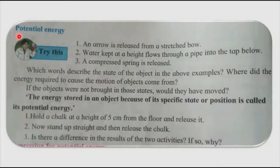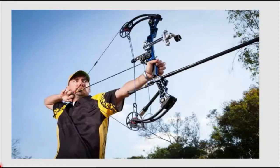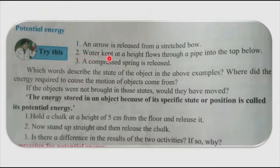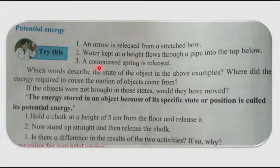Next, the other form of mechanical energy is potential energy. Let's see some examples from daily life. First, an arrow is released from a stretched bow. Second, water kept at height flows through a pipe into a tap below. Third, a compressed spring is released. The words 'stretched,' 'kept at height,' and 'compressed' describe the state of the objects. The energy required to cause the motion came from the energy stored in the system, that is, the potential energy of the system.